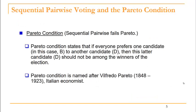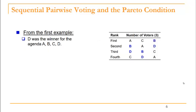A downside of sequential pairwise voting is that it fails what's called the Pareto condition. The Pareto condition states that if everyone prefers one candidate to another, then that latter candidate should not be among the winners. It is named after an Italian economist. Looking back at our first example, D was the winner using the agenda A, B, C, D.